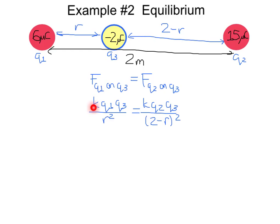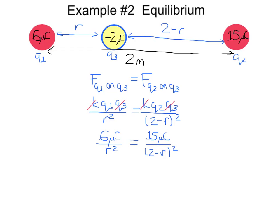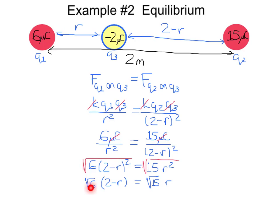Let's call the distance between the 6 microcoulomb charge and the negative 2 microcoulomb charge r, so the distance to the 15 microcoulomb charge is 2 minus r. Setting F(Q1,Q3) equal to F(Q2,Q3): K·Q1·Q3/r² = K·Q2·Q3/(2−r)². We cancel K and Q3 from both sides, and also the microcoulomb factor, reducing to 6/r² = 15/(2−r)². Cross-multiplying gives 6(2−r)² = 15r², then taking the square root of both sides: √6·(2−r) = √15·r. Solving for r gives the equilibrium position.